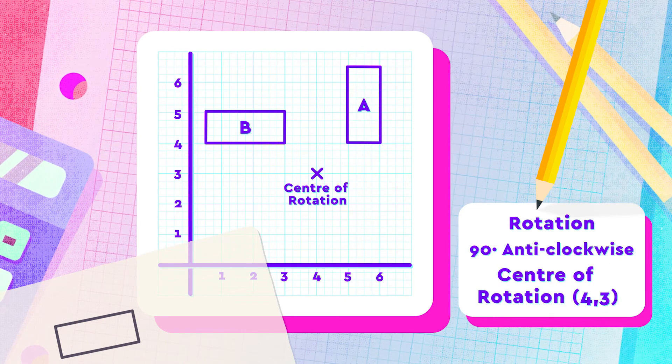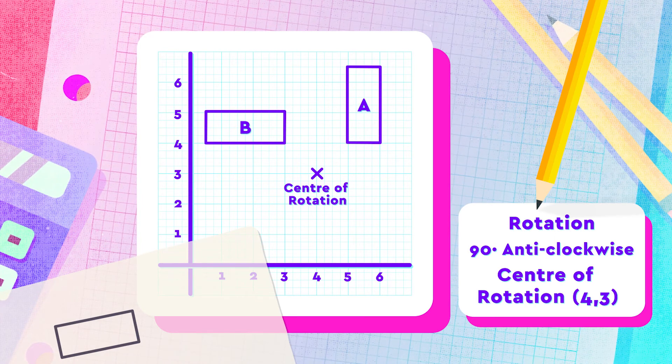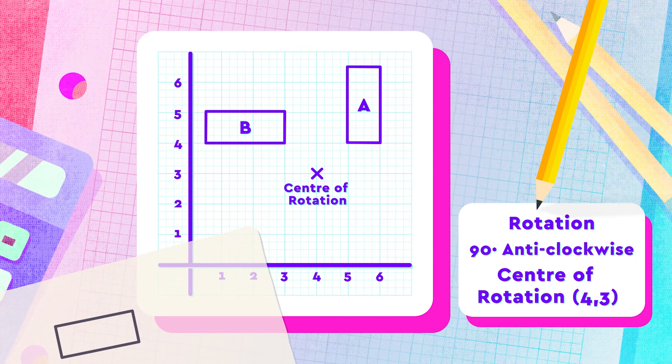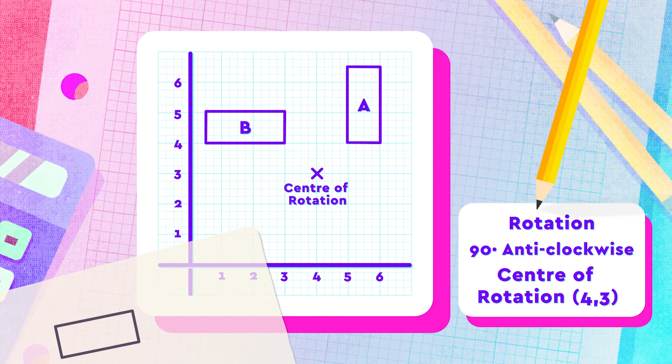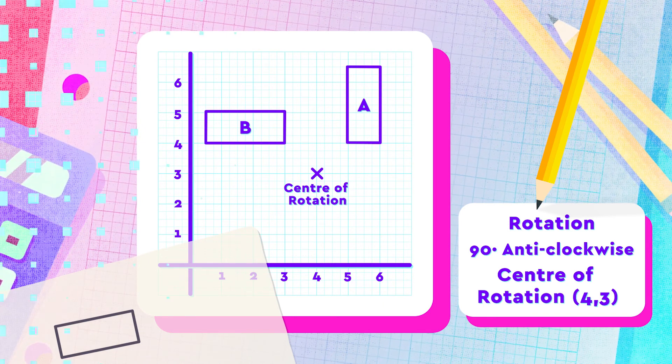The actual answer to the question will then involve saying that it is a rotation, then identifying what direction and how many degrees the shape has been rotated, and finally what is the center of rotation.